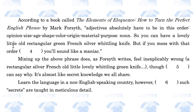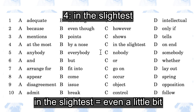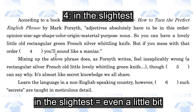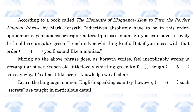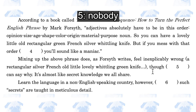But if you mess with that order blank, you'll sound like a maniac. The options are: at the most, by a nose, in the slightest, on end. The answer is 'in the slightest' — even a little bit, you'll sound like a maniac. Mixing up the above phrase does feel inexplicably wrong, though blank can say why. The options are: anybody, everybody, nobody, somebody. The answer is nobody — though nobody can say why.